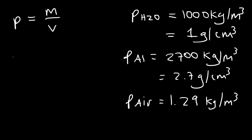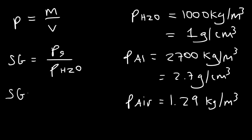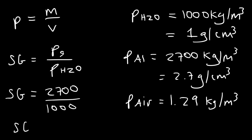What is the specific gravity of aluminum based on these values? The specific gravity is the density of the substance divided by the density of water — it's the ratio between the density of a substance relative to water. So the specific gravity of aluminum is 2,700 divided by 1,000, which equals 2.7.